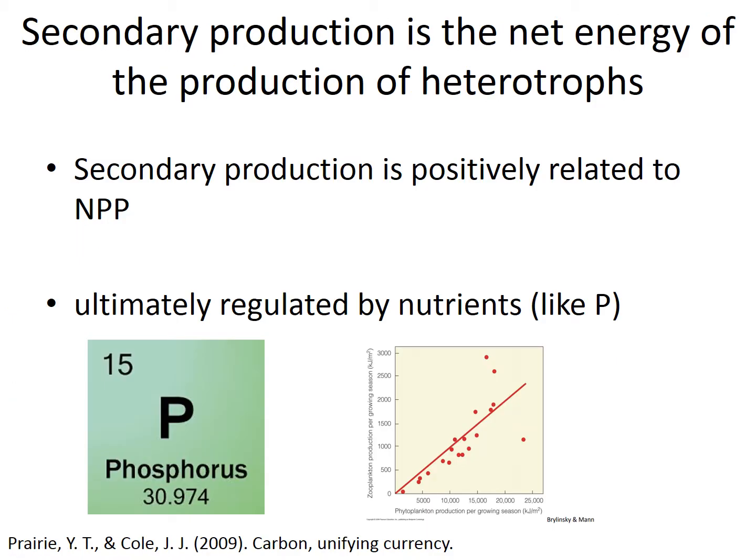Secondary production is the net energy production of heterotrophs. It is driven by the transfer of organic material between trophic levels and represents the quantity of new tissue created. Secondary production is positively related to NPP and is ultimately regulated by nutrients like phosphorus. Organisms responsible include animals, protists, fungi, and many different bacteria.